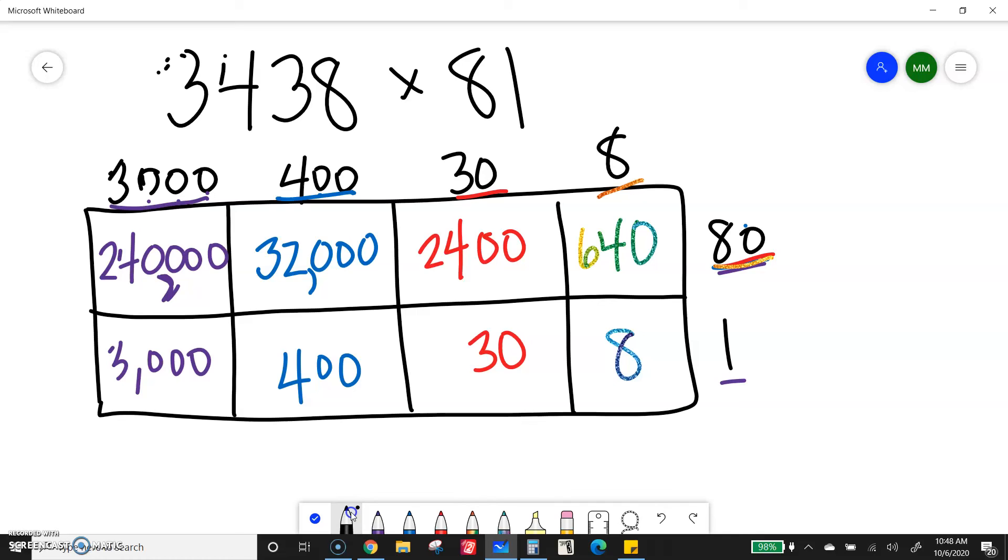Now, I don't want to run out of space. I'm going to write a little smaller than I did last time. All right. I have 240,000, 32,000, 2,400, 640.